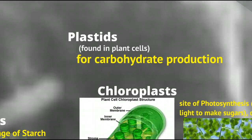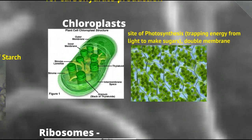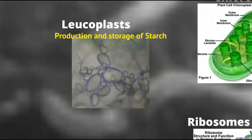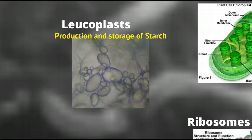From there, we'll move on to plastids. Plastids are organelles found only in plant cells, and they're for carbohydrate production. Specifically, we have chloroplasts, which is our site of photosynthesis. Like the mitochondria, chloroplasts have two membranes, and their origin is also discussed in the endosymbiosis video. They contain photosynthetic pigments — chlorophyll — which gives them their bright green color, and it is our site of photosynthesis, where we make sugars. The other plastids are called leukoplasts, found in great numbers in roots, where we produce and store starch, another carbohydrate.